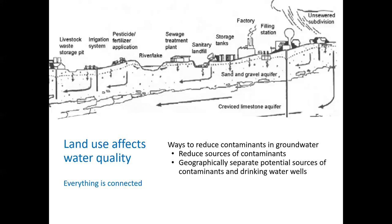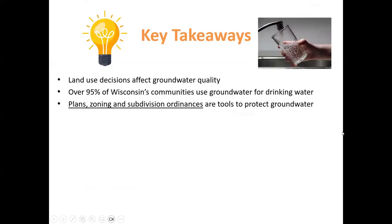Potential sources of groundwater contamination include livestock waste storage pits, irrigation systems, pesticide and fertilizer applications to fields, golf courses, lawns, landfills, storage tanks — which could contain gasoline, petroleum, or almost any kind of chemical — gas stations, and unsewered subdivisions on septic systems.